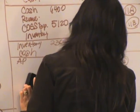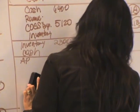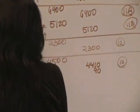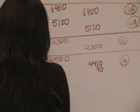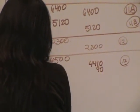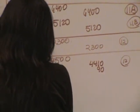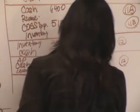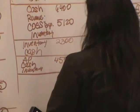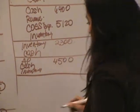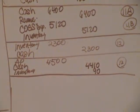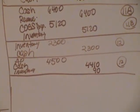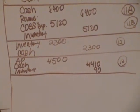The cost principle states that whatever we pay for something, that's what it's worth. If Danny goes and buys a new computer and he pays $3,000, I'm willing to believe it's worth $3,000. That's called the historical cost principle.